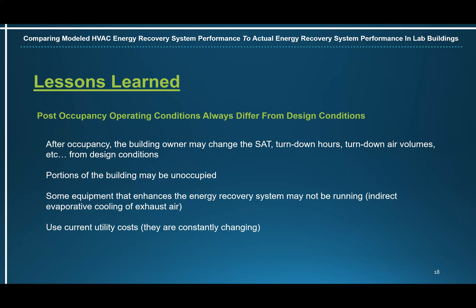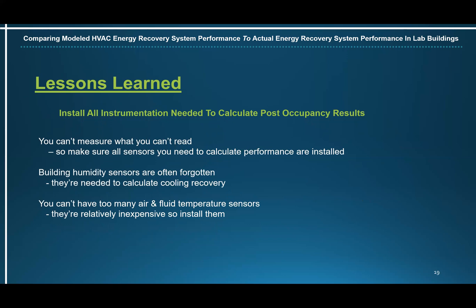Use current utility costs — from the time a building is designed and modeled until it's actually occupied, there can be significant changes in utility costs. Install all instrumentation needed to calculate post-occupancy results. You can't measure what you can't read, so make sure all sensors needed to calculate performance are installed. Building humidity sensors are often forgotten, and they're needed to calculate cooling recovery. And lastly, you can't have too many air and fluid temperature sensors — they're relatively inexpensive, so install as many as you need.